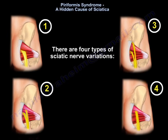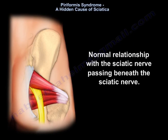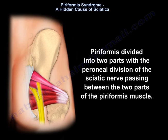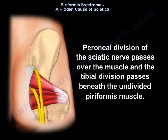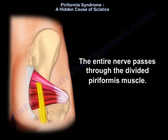There are four types of variations. The first is the normal relationship, with the sciatic nerve passing beneath the piriformis muscle. The second variation: the piriformis is divided into two parts, with the peroneal division of the sciatic nerve passing between the two parts. The third variation: the peroneal division passes over the muscle and the tibial division passes beneath the undivided piriformis. In the fourth variation, the entire nerve passes through a divided piriformis muscle.